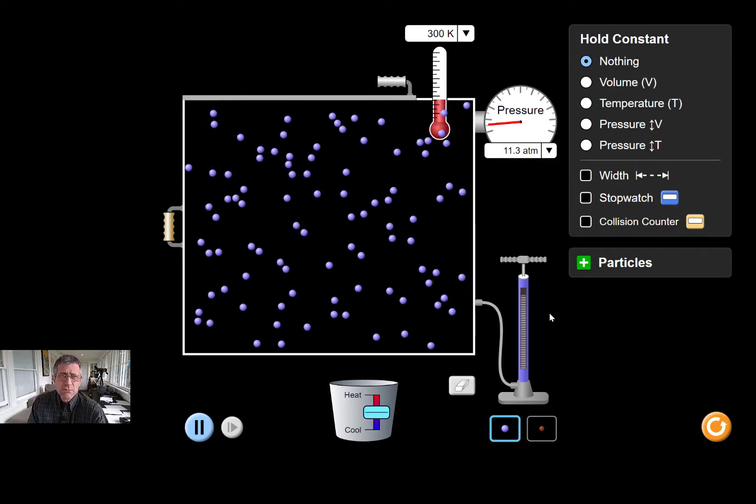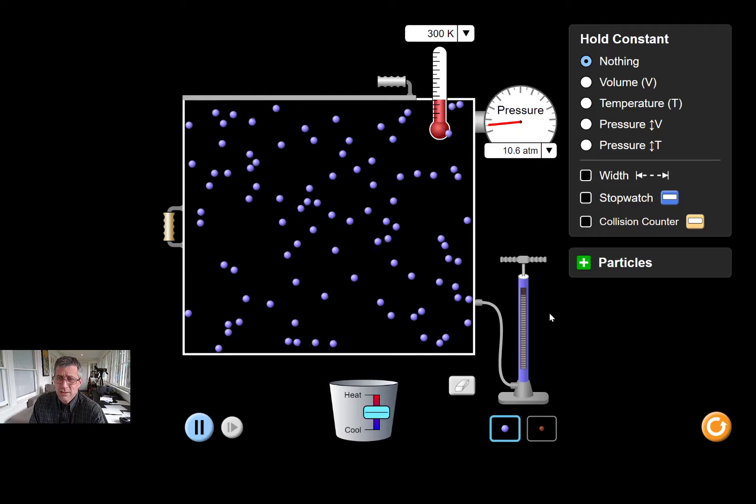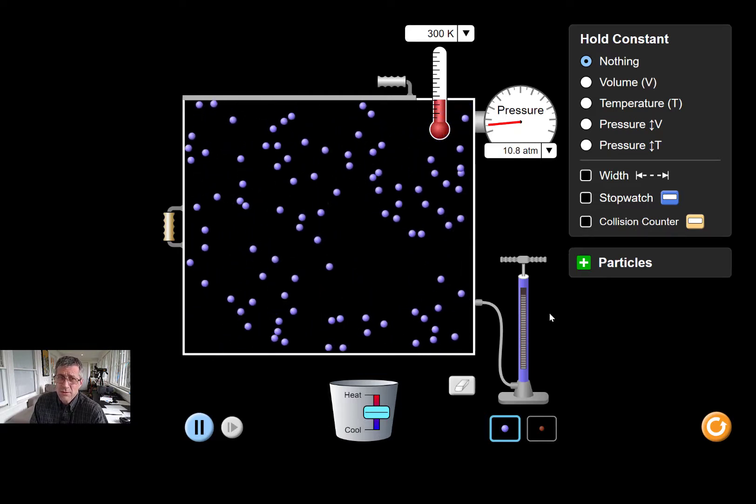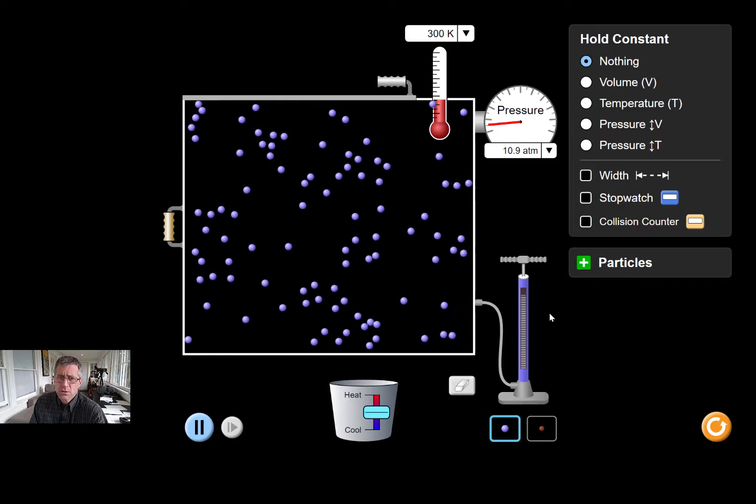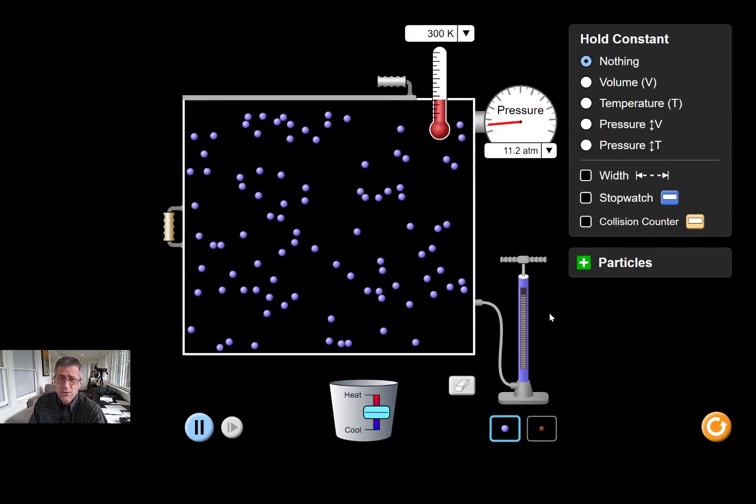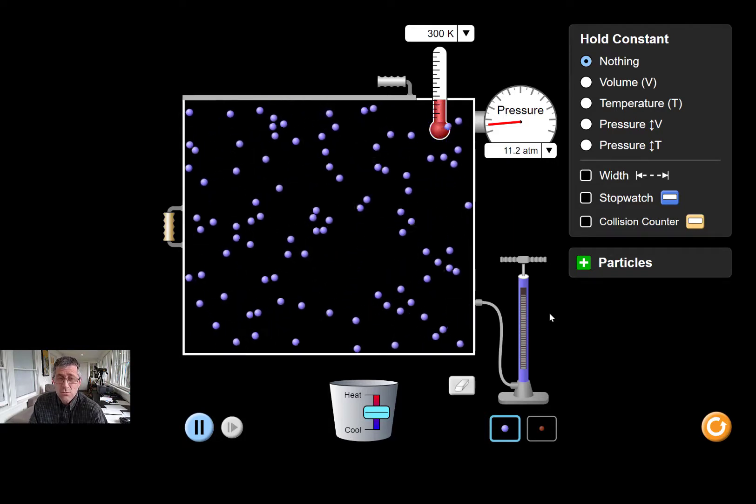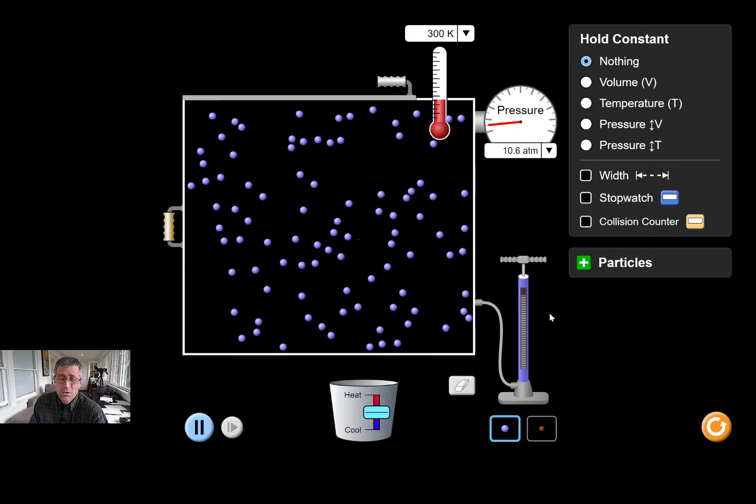Secondly, notice that when the balls smash into each other, that they don't stick. That's not really true all the time, and in higher chemistry classes we can account for that, but it works reasonably well for this level of chemistry. So we'll assume that they bounce into each other fully elastically. So we don't lose any energy and they don't stick to each other or to the sides of the walls of the container.